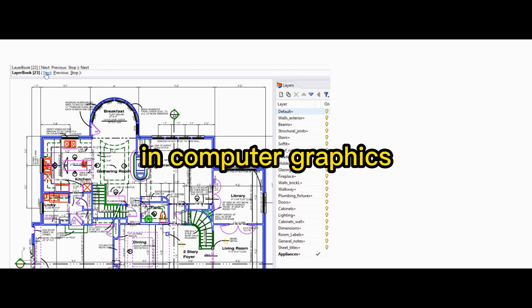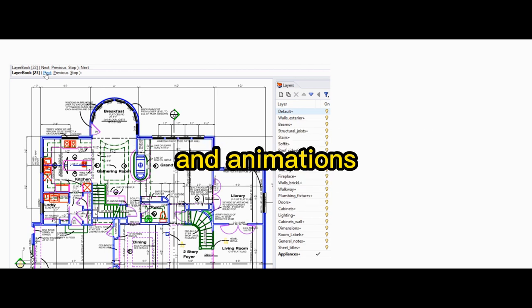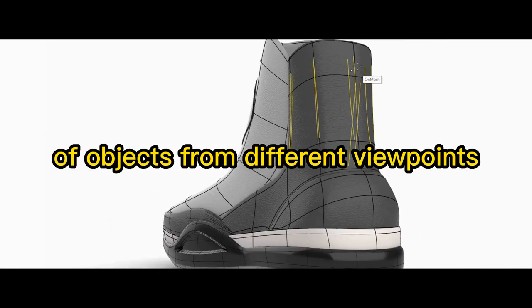In computer graphics, descriptive geometry is used to create 3D models and animations and to render images of objects from different viewpoints.